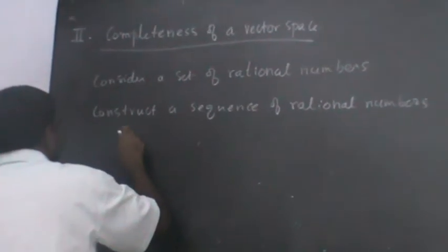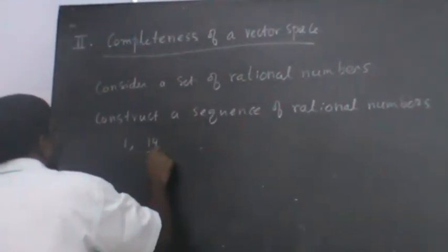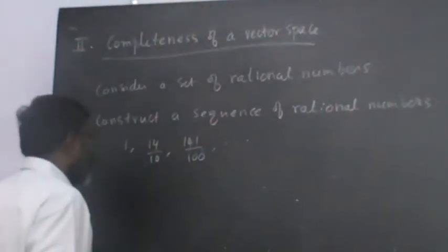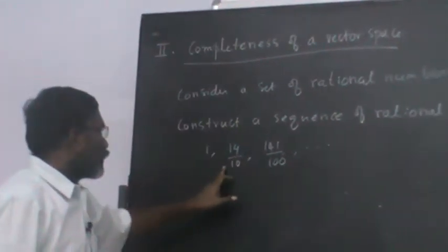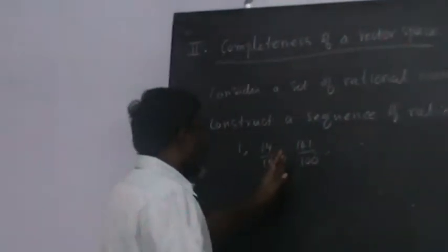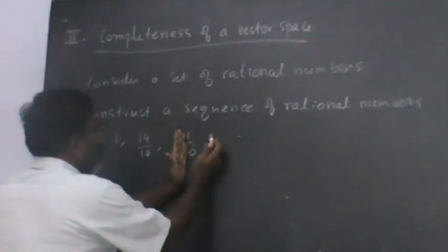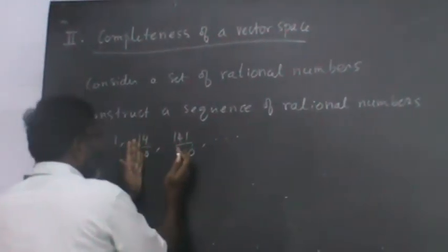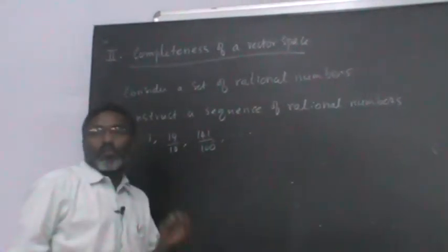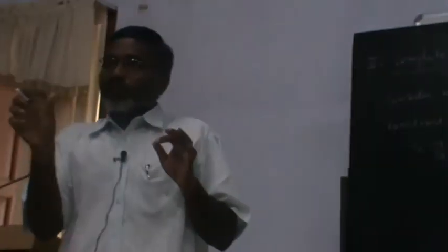Such as 1, 14 by 10, 141 by 100, and so on. I go on constructing the sequence of rational numbers like this, such that the distance between consecutive elements is smaller and smaller — they become closer and closer as the sequence number increases.